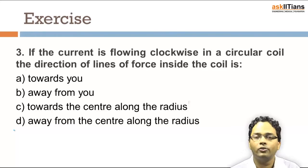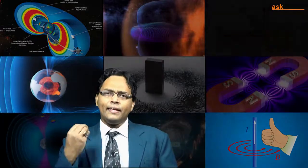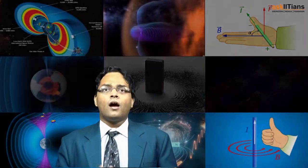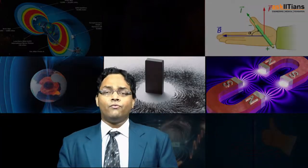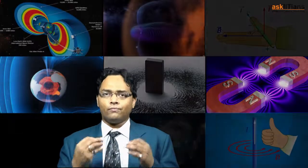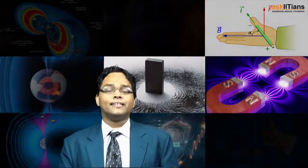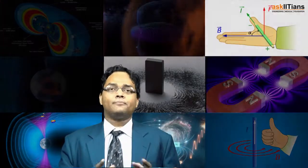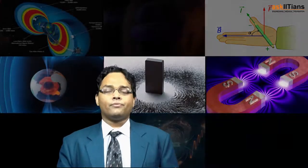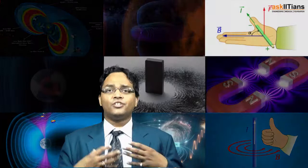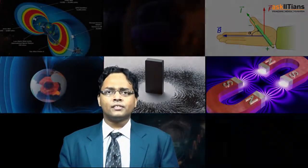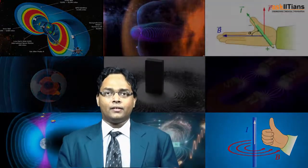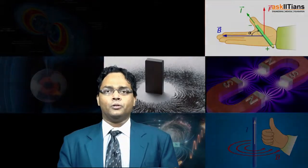Hopefully you understood till this point. So students, we learned about magnetism — how when an electron moves within an atom, it produces a magnetic field. We generalized this for any current flowing in a circular loop, which gives us Biot-Savart's law, and explored examples using it. This was the introduction to magnetism. In the next part, we'll discuss the magnetic dipole. Stay tuned.